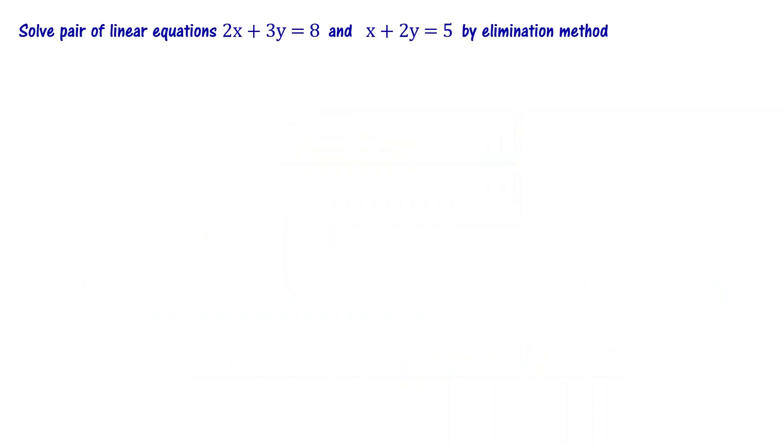Solve pair of linear equations 2x plus 3y equal to 8 and x plus 2y equal to 5 by elimination method. In elimination method, we want to eliminate one of the variables first from these equations.